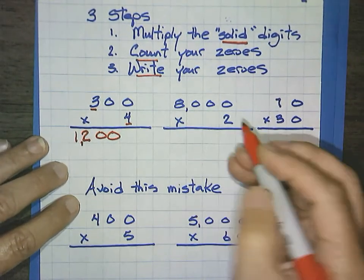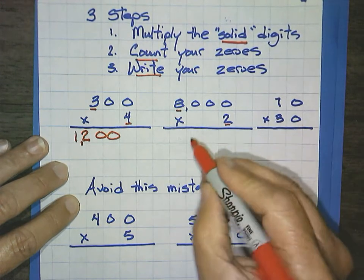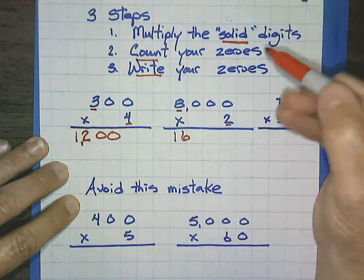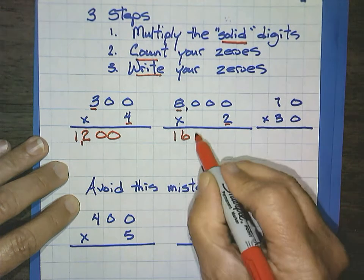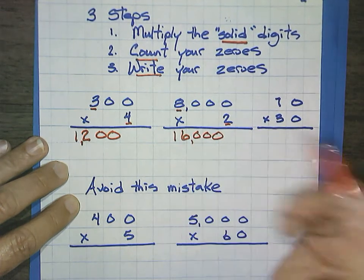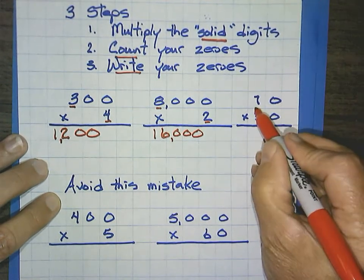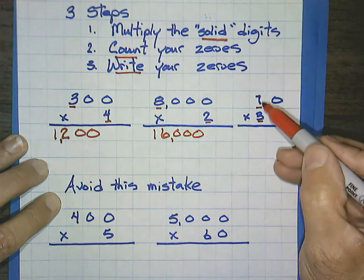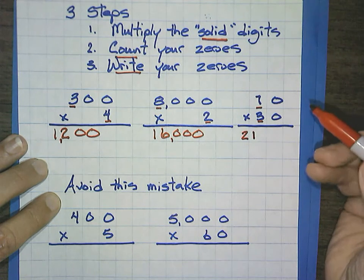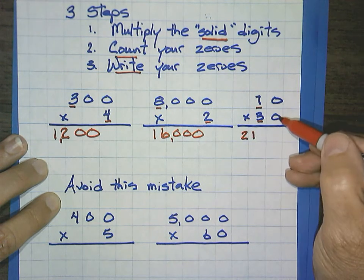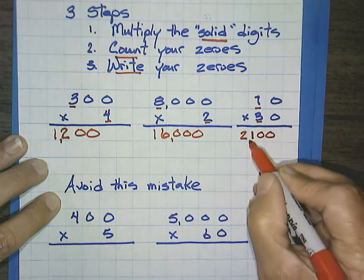All right. 8,000 times 2. Well, my last step is that I write 1, 2, 3. And in this example here, 70 times 30. My solid digits would be 7 times 3 is 21. Then step 2 is we count the zeros. 1, 2. And the third step is to write the zeros. In other words, two zeros for 2,100.